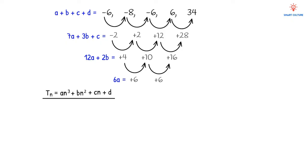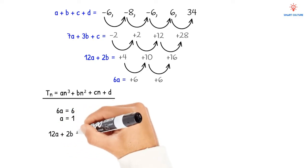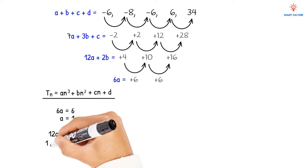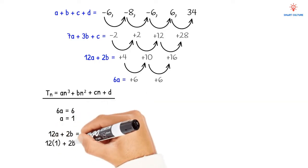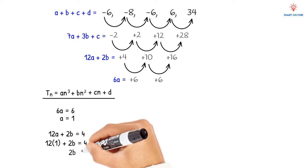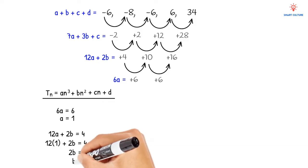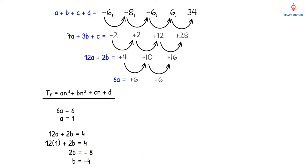Let's solve for a: 6a = 6, so a = 1. Next, solving for b using 12a + 2b = 4. Substituting a = 1: 12(1) + 2b = 4, so 2b = 4 - 12 = -8, giving b = -4.